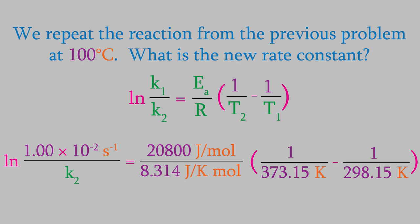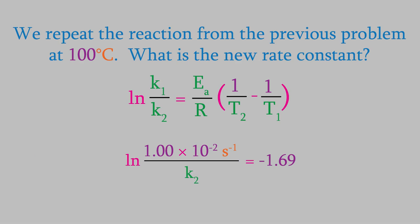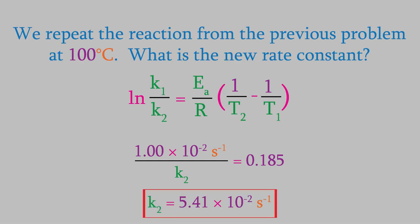Now we'll just solve for k2. The term in parentheses is negative 6.74 times 10 to the minus 4 Kelvin to the minus 1. Now the right side of the equal sign turns out to be negative 1.69. We need to get rid of the logarithm on the left side, and we do that by making the right side of the equal sign the exponent on E. That gives us 0.185 on the right side. Finally, we get 5.41 times 10 to the minus 2 seconds to the minus 1 for the rate constant.